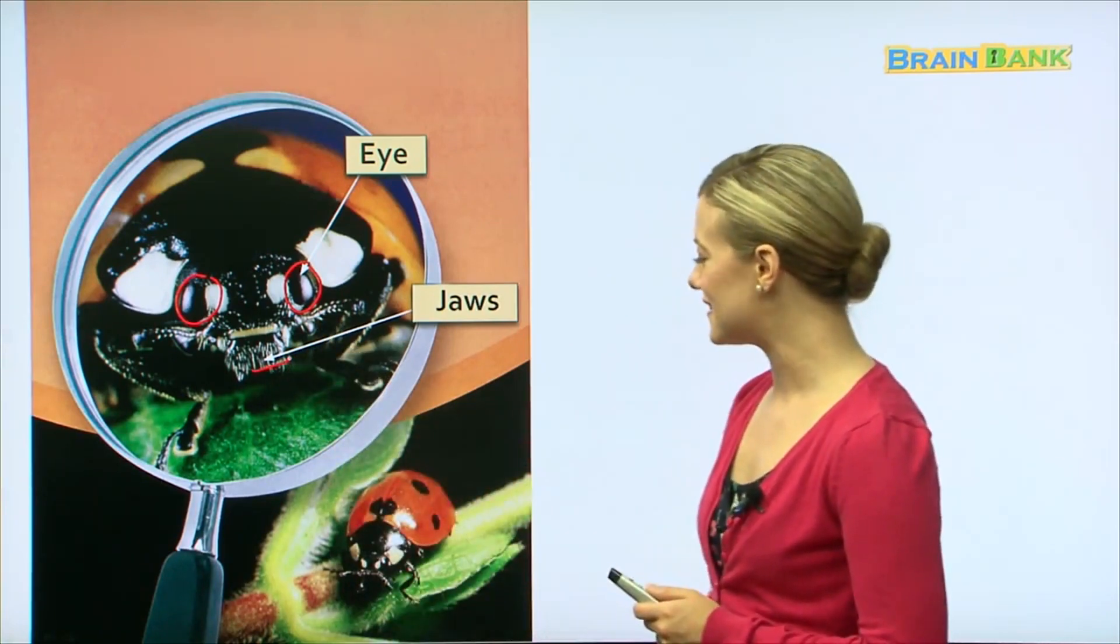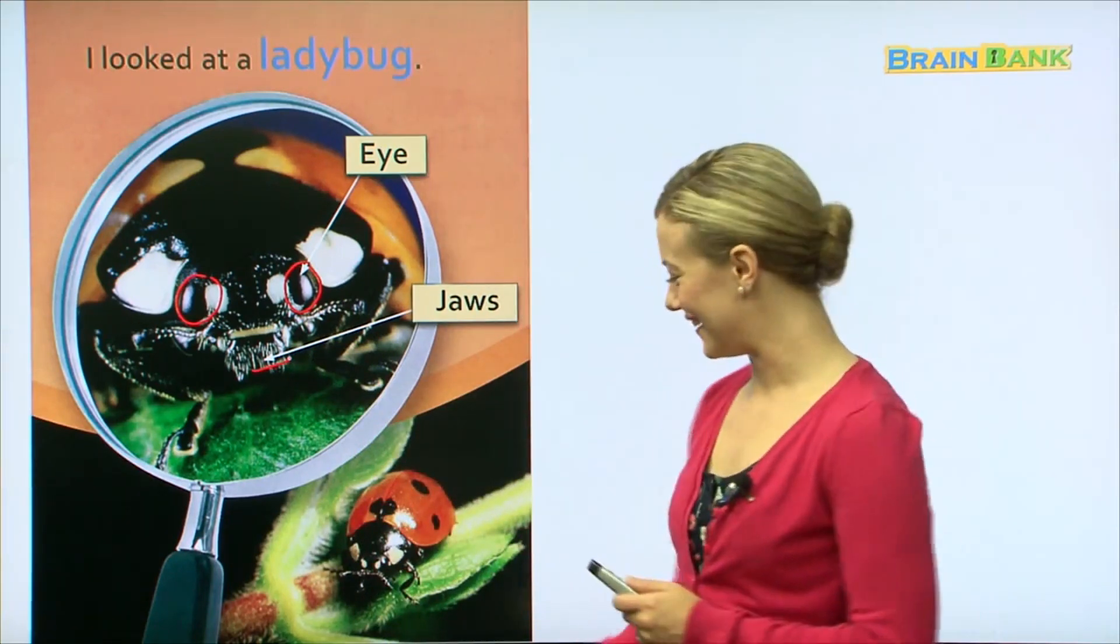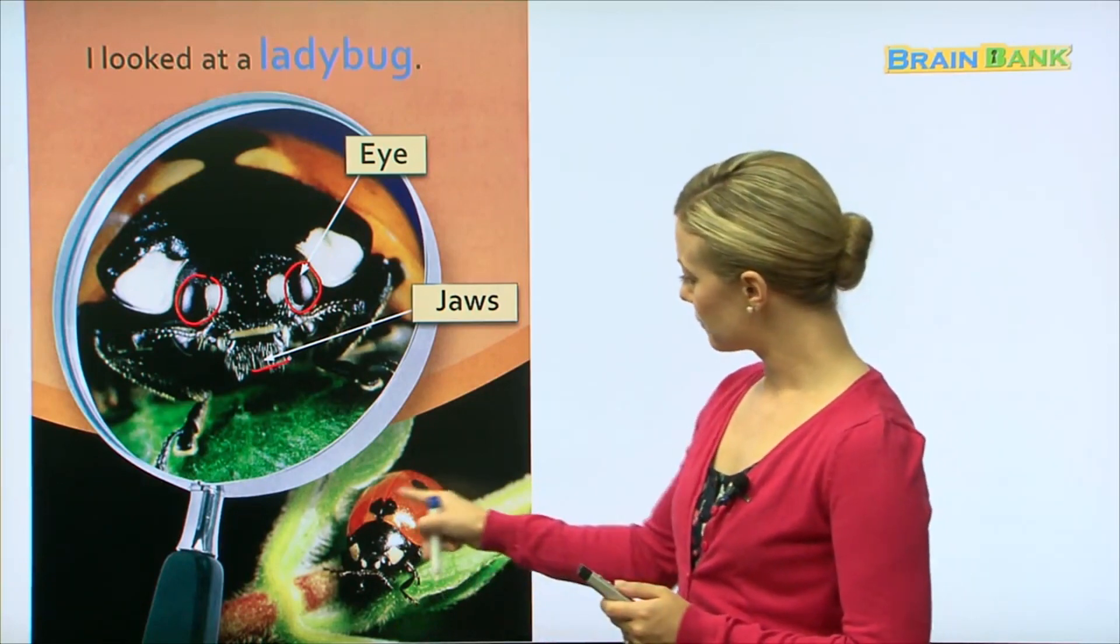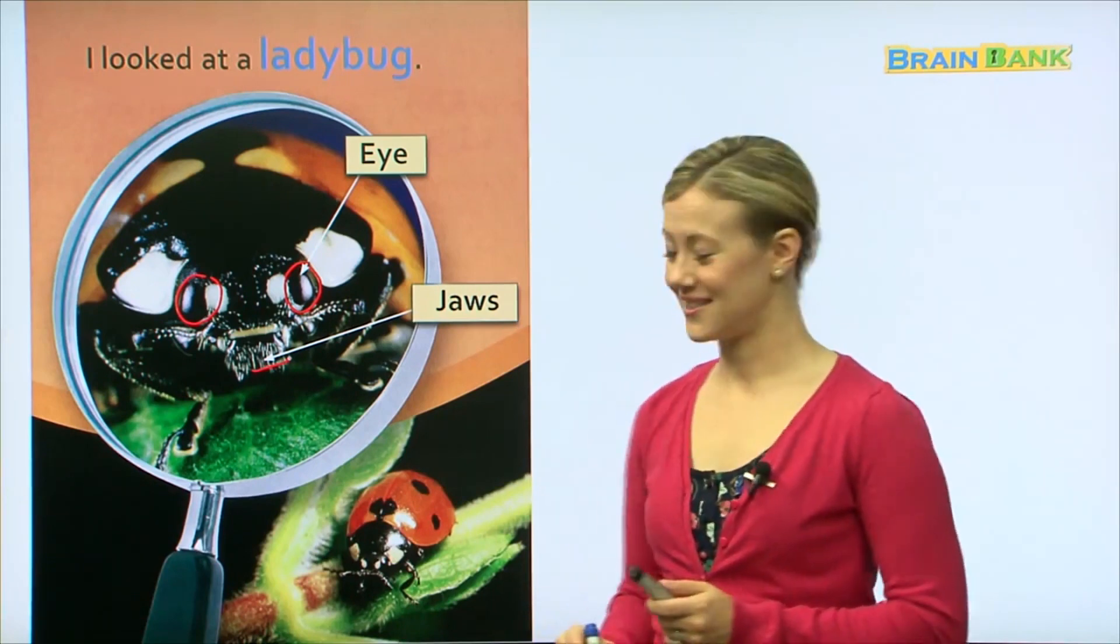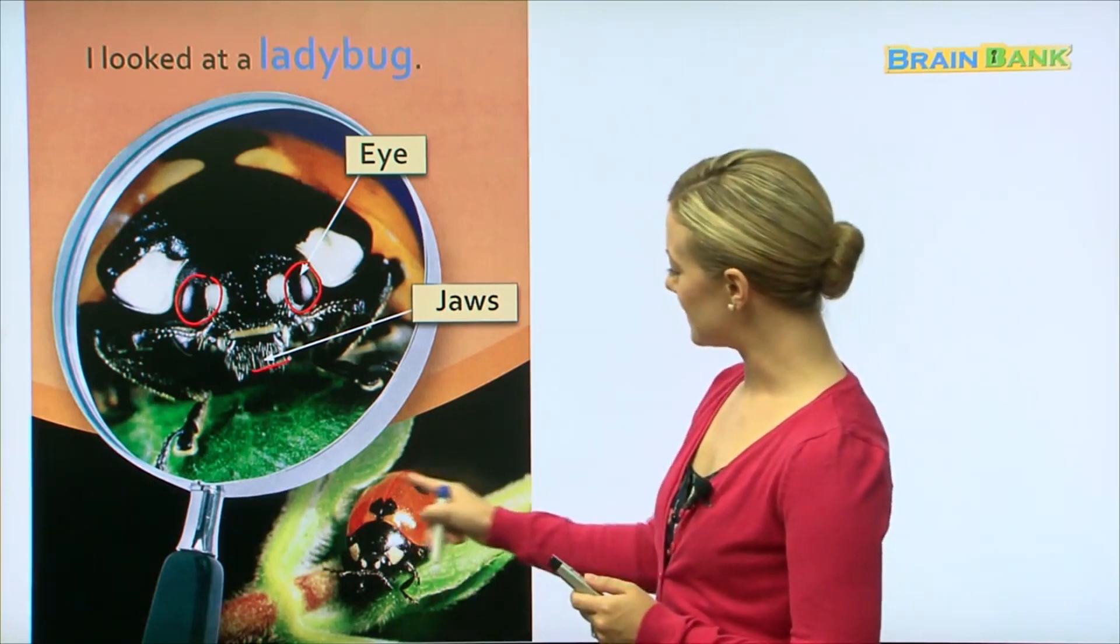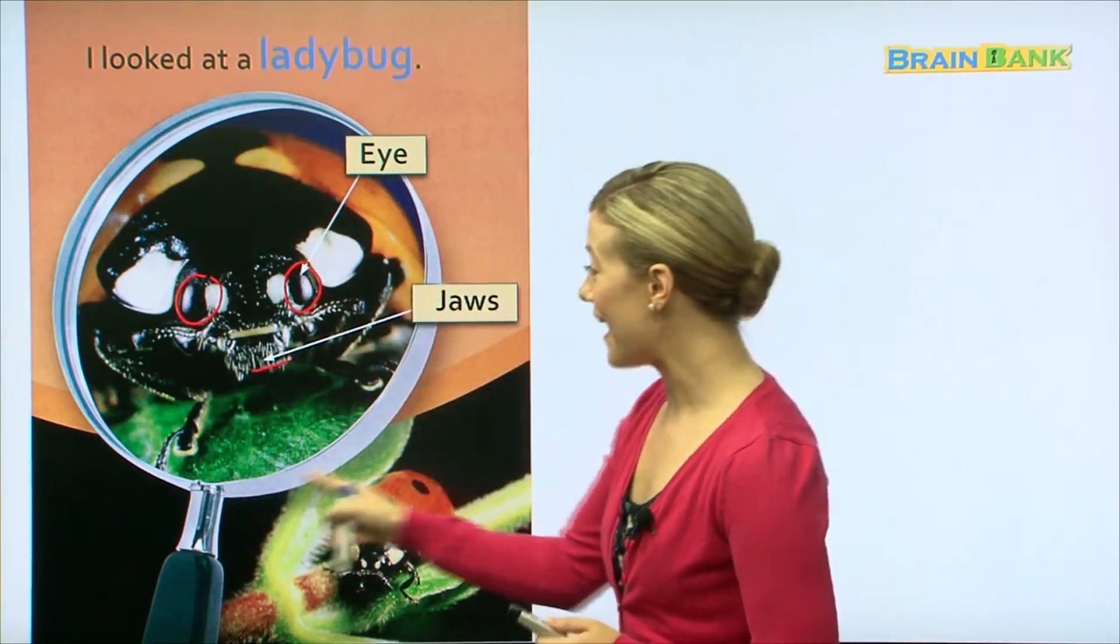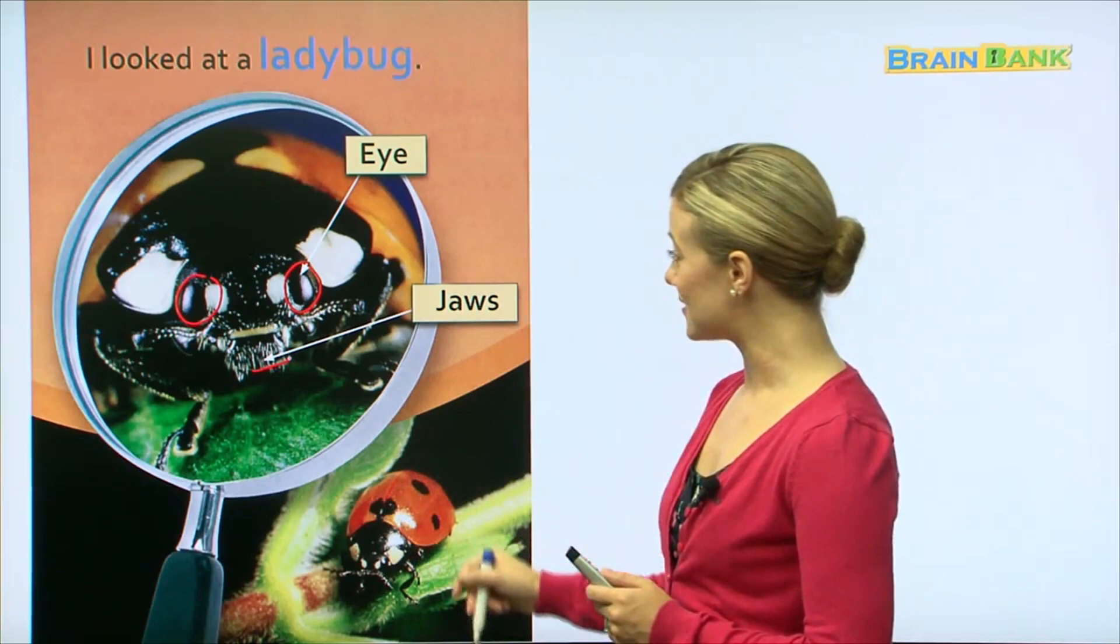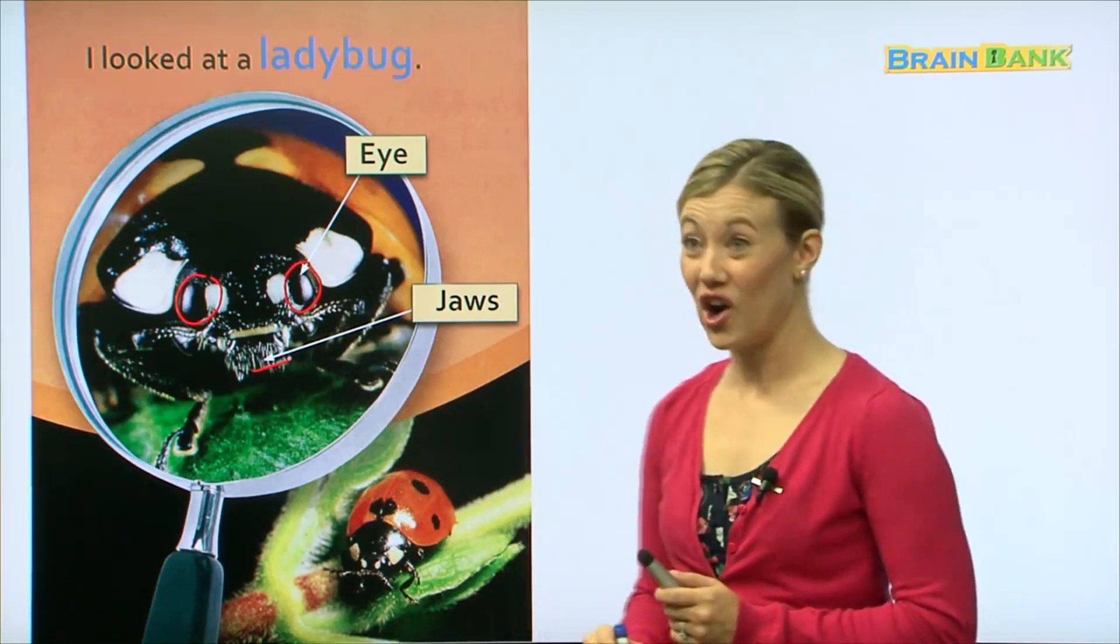This is a ladybug. A ladybug - do you know what a ladybug is? The outside has red with black dots. So this is a ladybug. However, when we look at it through the magnifying glass, I don't even see the pretty red wings. Do you? I just see these scary eyes and jaws. Yikes.